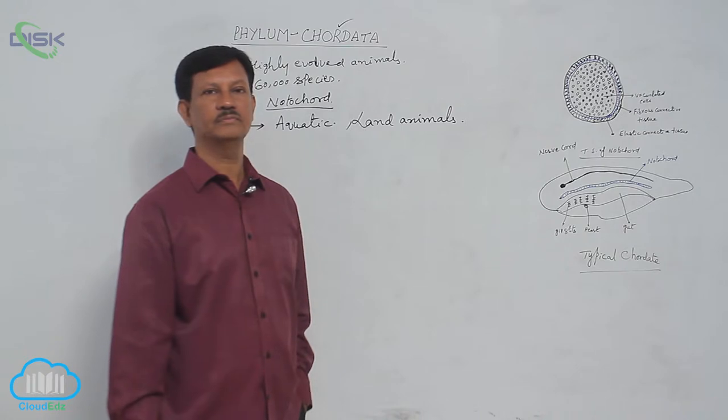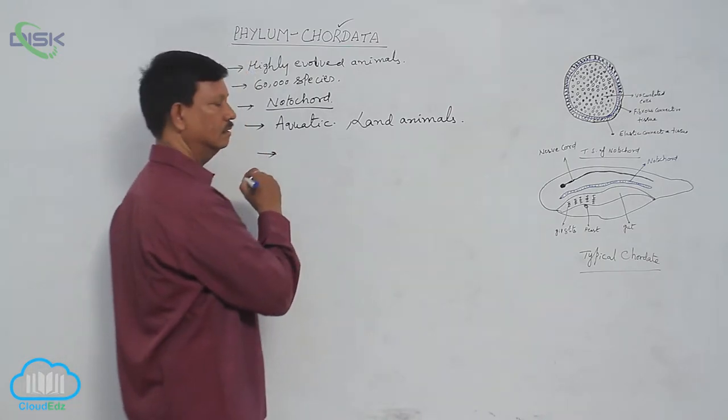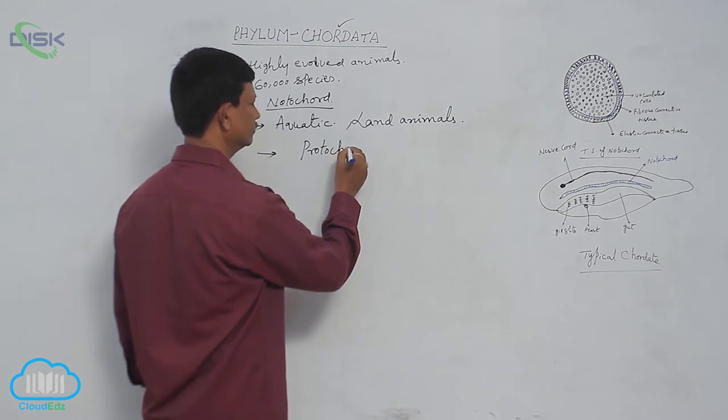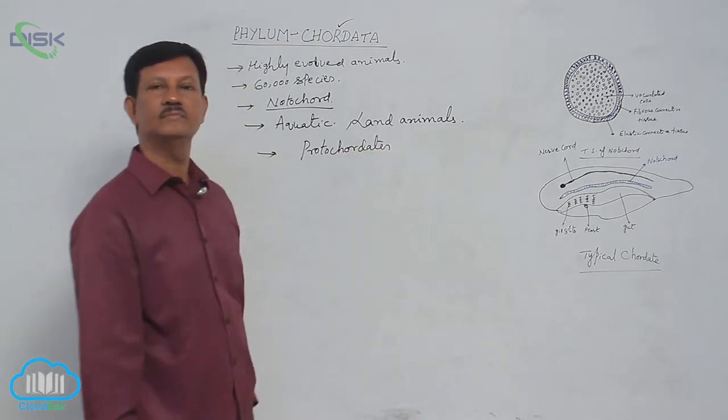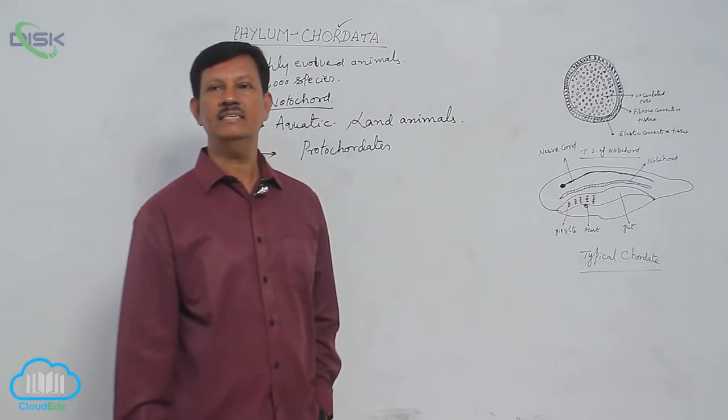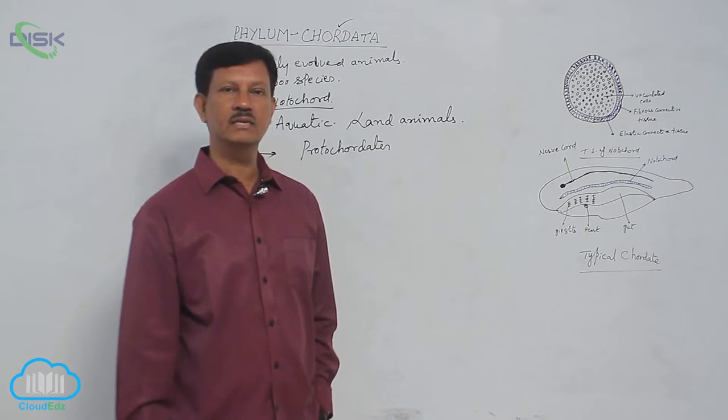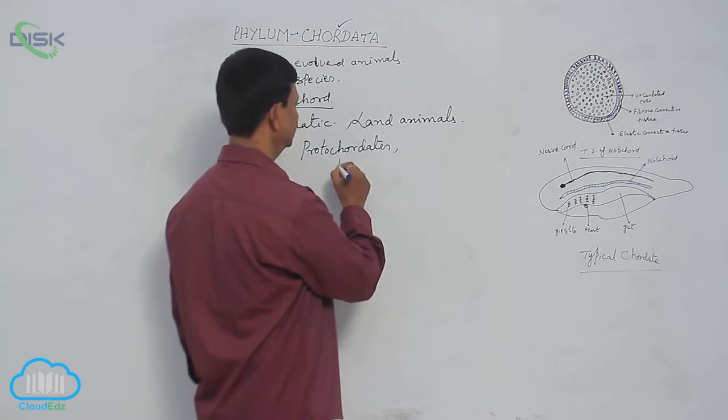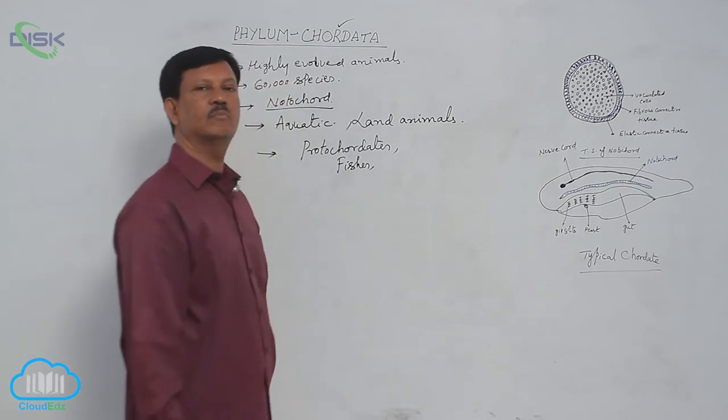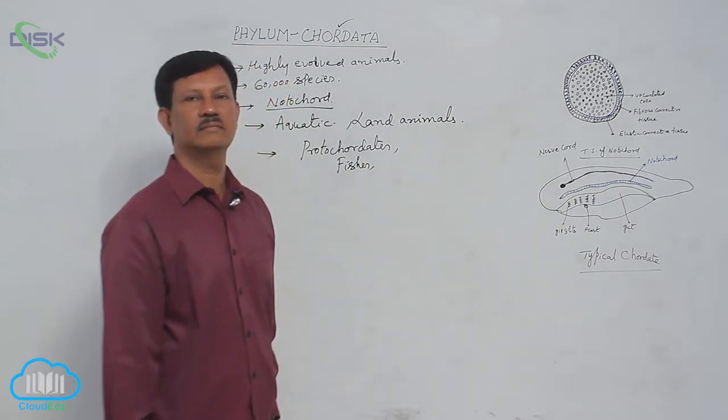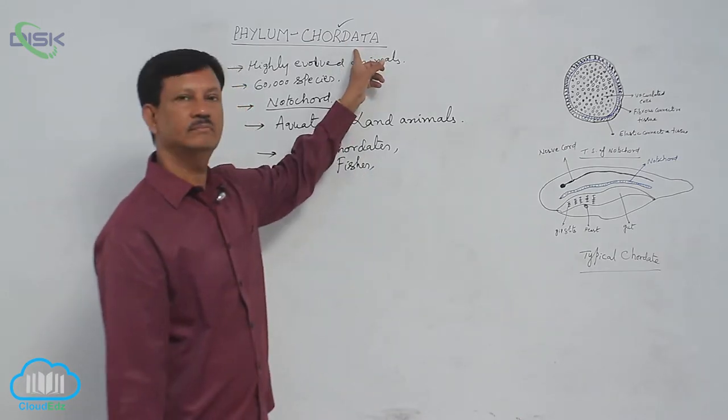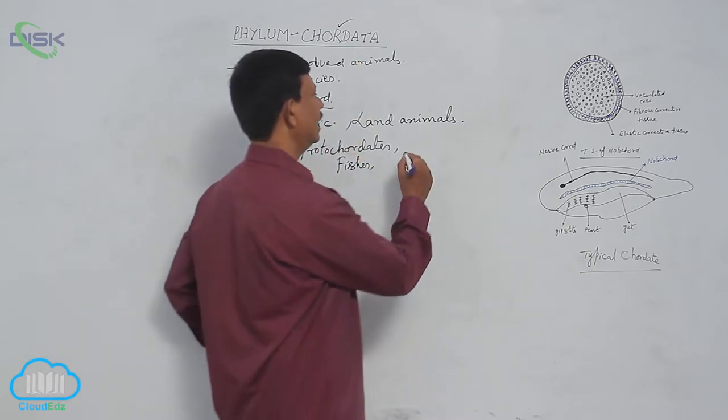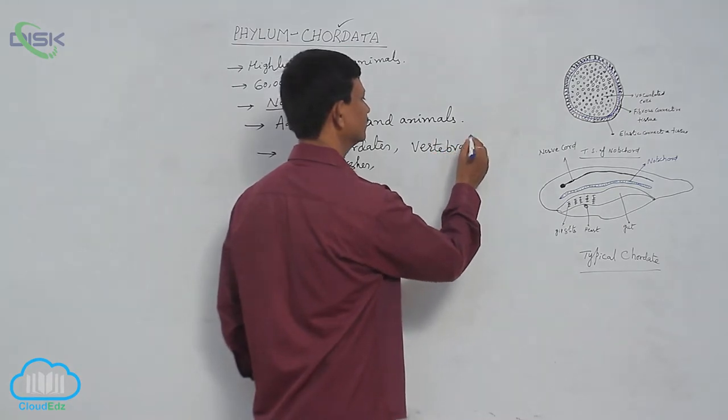This phylum includes protochordates like Urochordata and Cephalochordata, cyclostomes, and tetrapods. Fishes and tetrapods like amphibians, reptiles, birds, and mammals are all included in phylum Chordata. It means it includes protochordates and vertebrates.